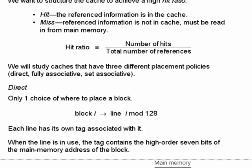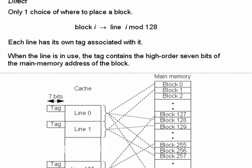Now let's talk about direct mapped caches. In a direct mapped cache, we have only one choice of where to place a block — when we bring in block I, we place it in line I mod 128. This restriction simplifies the cache design. Each line has its own tag, and when the line is in use, the tag contains the high-order 7 bits of the main memory address of the block. The offset field — 4 bits wide — tells us where in a block a particular word is located, since there are 16 words per line.